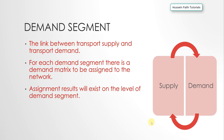Now moving to the demand segment, which belongs to the supply side of the model. The demand segment is a linkage between transport supply and transport demand. For each demand segment there is a demand matrix to be assigned to the network. For example, a demand segment called 'car' will have its own matrix assigned in Visum, and the assignment results exist at the level of the demand segment.